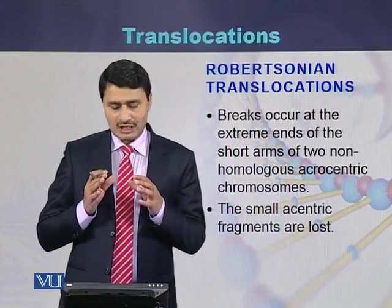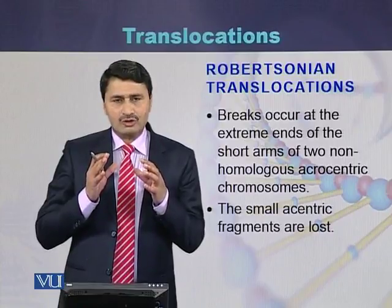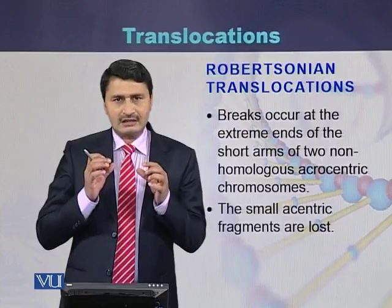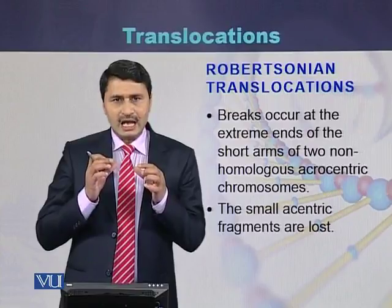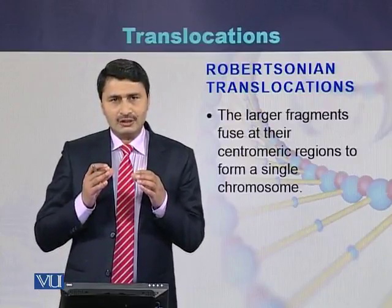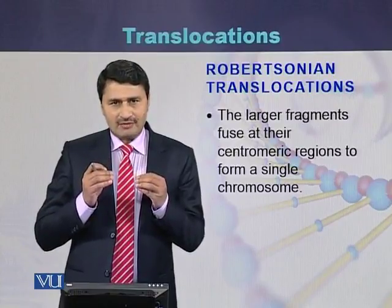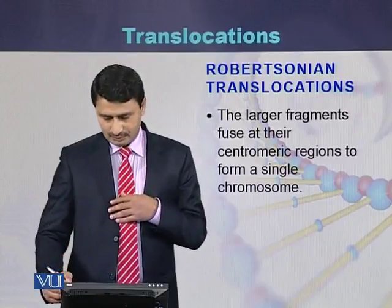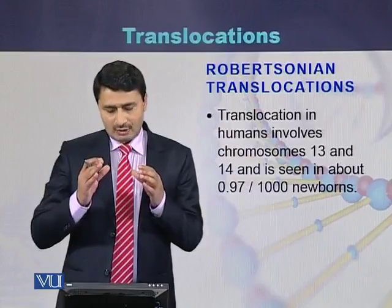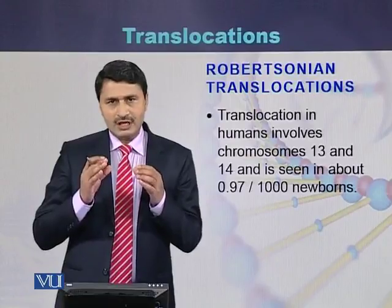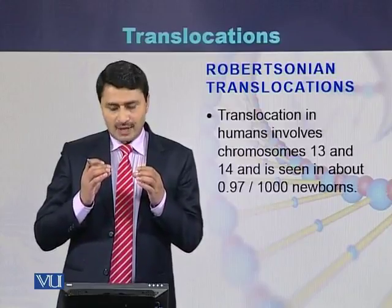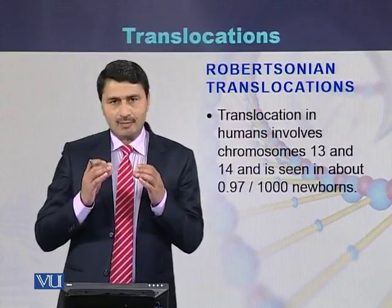In the case of Robertsonian translocation, it usually occurs between two acrocentric chromosomes. During this kind of translocation, the smaller parts of the chromosomes are deleted and the larger fragments fuse with each other to form a single chromosome. Robertsonian translocation occurs between chromosome 13 and chromosome 14. This is a normal phenomenon in humans, and it is seen that approximately one in every newborns has Robertsonian translocation.